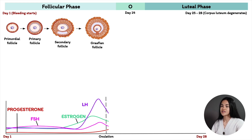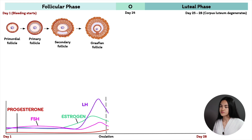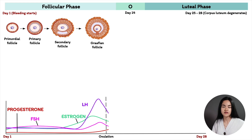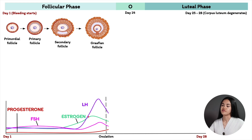From day 1 to day 7, multiple follicles develop, and around day 7 one follicle becomes the dominant follicle and develops into a Graafian follicle. It secretes large amounts of estrogen from the granulosa cells, with the help of theca cells. When it transitions into a mature Graafian follicle, it starts secreting large amounts of estrogen — and that marks the end of the follicular phase, days 1 to 14.